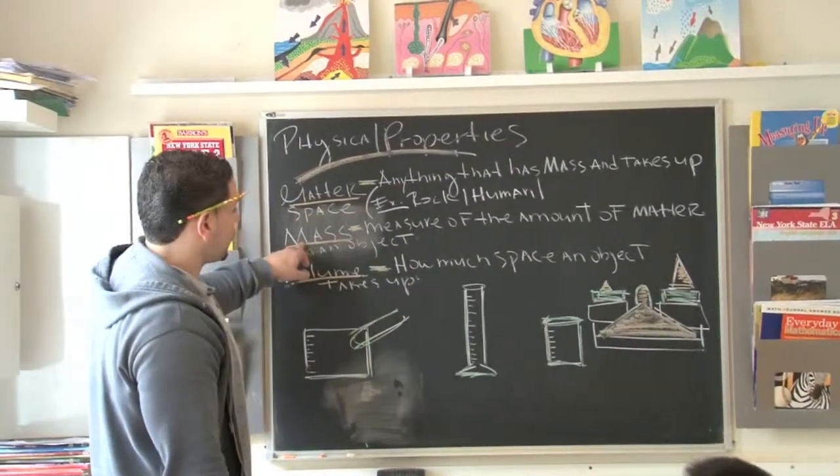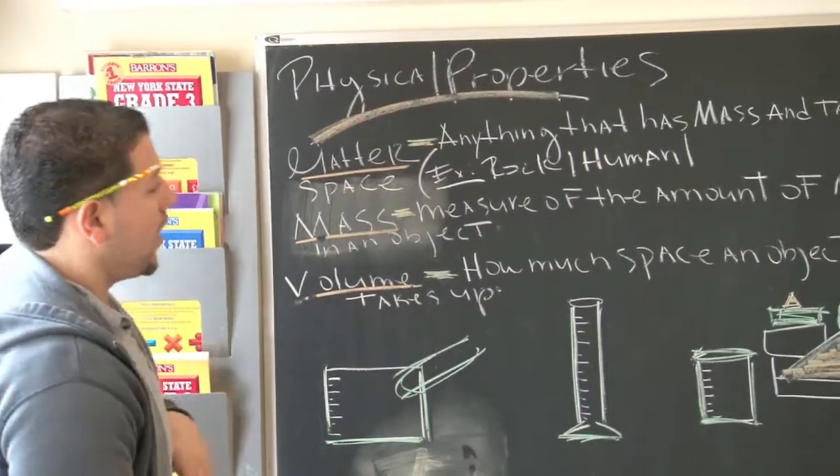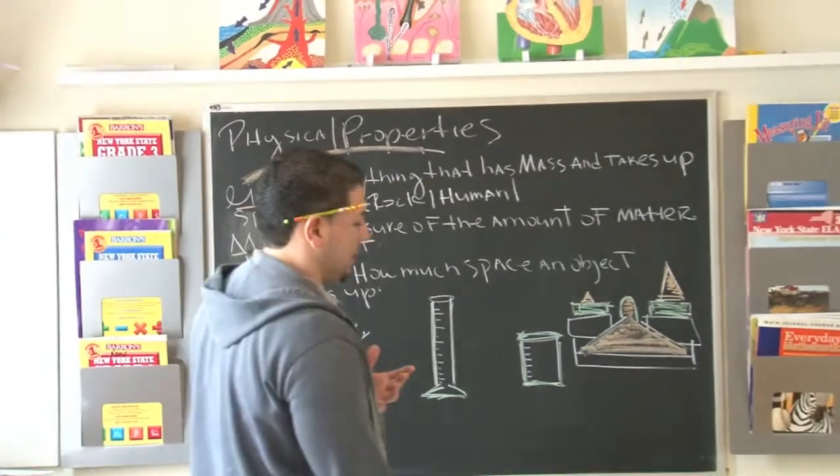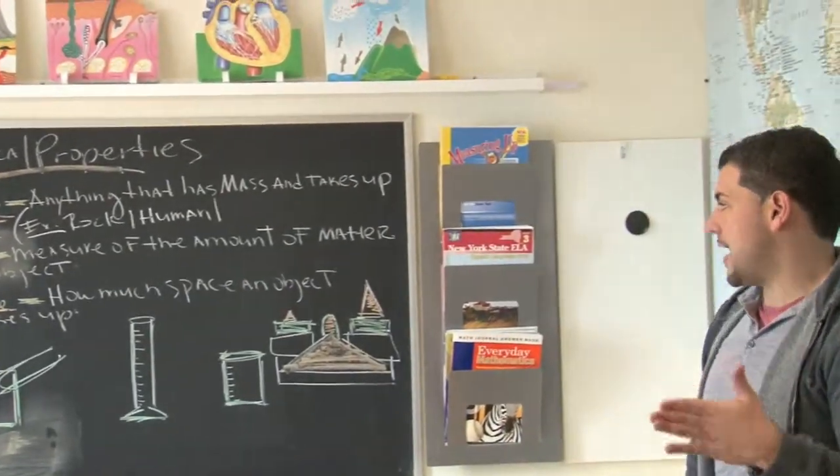Now, looking at the next word, we have mass. Everybody want to write mass? It says the measure of the amount of matter in an object. So now we're trying to find out, you know, how big is this thing? Okay? Mass. The measure of the amount of matter in an object.